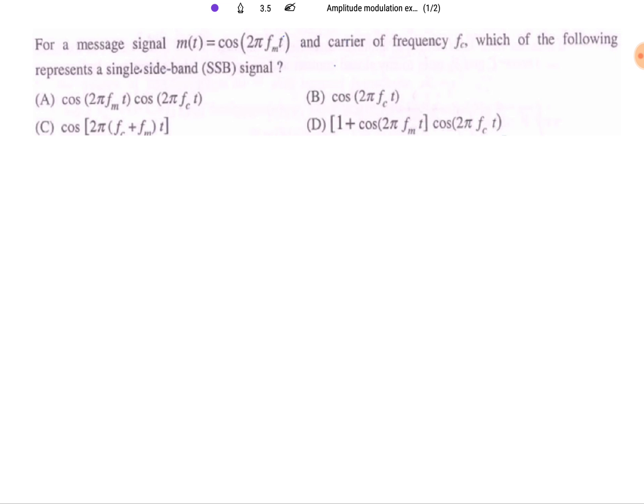Here is the first question. You will be finding message signal mt equals cos of 2π fmt and carrier frequency fc. Which of the following represents single sideband SSB signal? That is what we need to identify out of four equations.